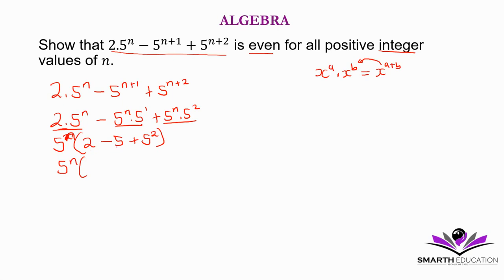2 minus 5 is negative 3. Negative 3 plus 25 is 22. You can factor out 2 and have your 5 to the power n and 11. If you multiply any integer with 2, you will get an answer which is even.